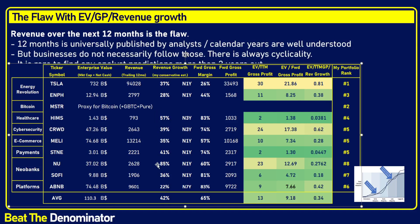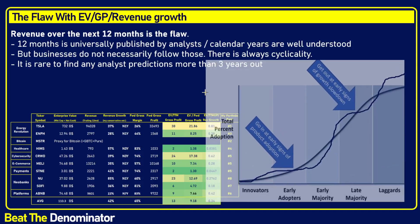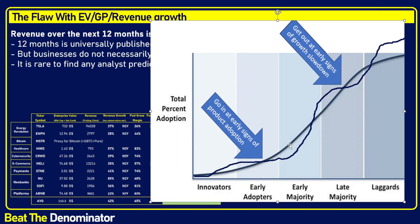The problem with that revenue growth is that it assumes 12 months — a one-year revenue growth period — which is the major flaw in the thesis. When you look at the S-curve, the product adoption or service adoption S-curve, when it's drawn professionally it looks straight, it looks like a straight line, it looks even and very nice. So it wouldn't change much where you took one year here or one year at the top; that should be roughly the same.